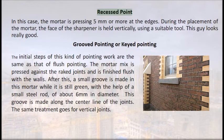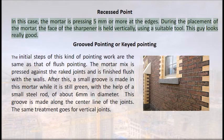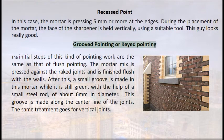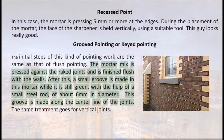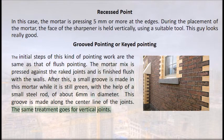Recessed pointing: the mortar is pressed 5 mm or more back from the edges, with the face held vertically using a suitable tool — this looks really good. Grooved or keyed pointing: the initial steps are the same as flush pointing — mortar is pressed against rake joints and finished flush. Then, while the mortar is still green, a small groove is made along the center line of the joints using a small steel rod of about 6 mm diameter. The same treatment applies for vertical joints.